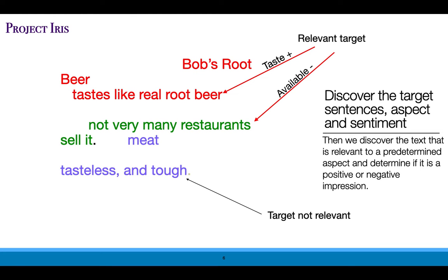The next step is to classify those entities. Root beer, for example, is classified as a soft drink. Once we've classified these entities, we determine the aspects related to each one. For root beer, we've targeted taste and availability as sentence fragments to be analyzed. We say that Bob's root beer tastes like real root beer — so the relevant target is the taste of a soft drink. When we say that root beer is not available in very many restaurants, that is an availability target. When we see that meat is tasteless and tough, those are not targeted as aspects of any entity we're looking for. By looking at the category, the aspect, and the value of that aspect, we can determine if there's a positive or negative impression associated with each aspect of the drink.